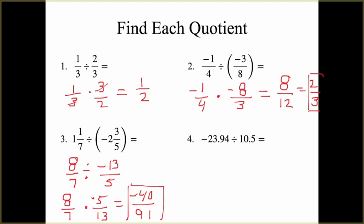For number 4, we have division of decimals. We have negative 23.94 divided by 10.5. I'm not expecting you to do the long division, but using a calculator you should get negative 2.28. The sign is negative because we have a negative divided by a positive — two different signs give a negative answer.